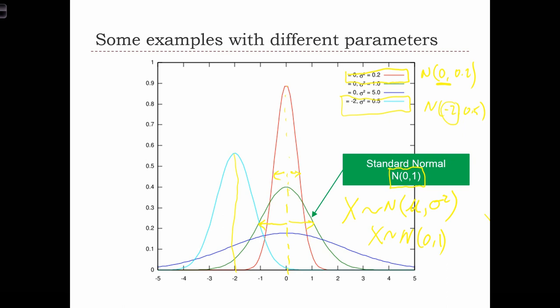And if we look at the last curve, it's centered on 0, but it has a really big variance, a variance of 5. So we see much more spread in this distribution.